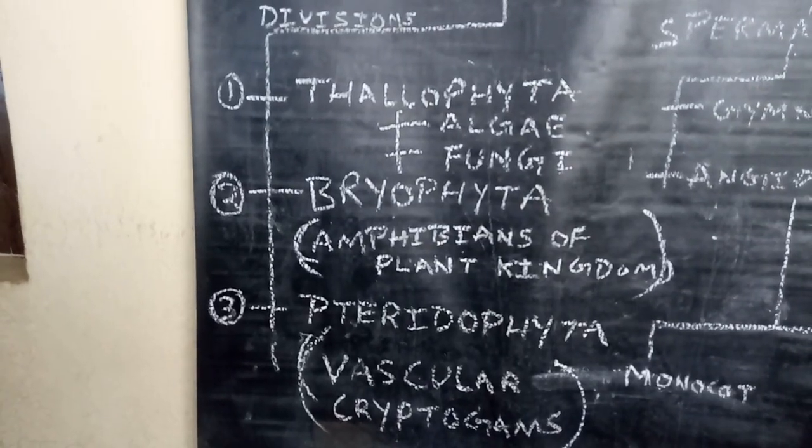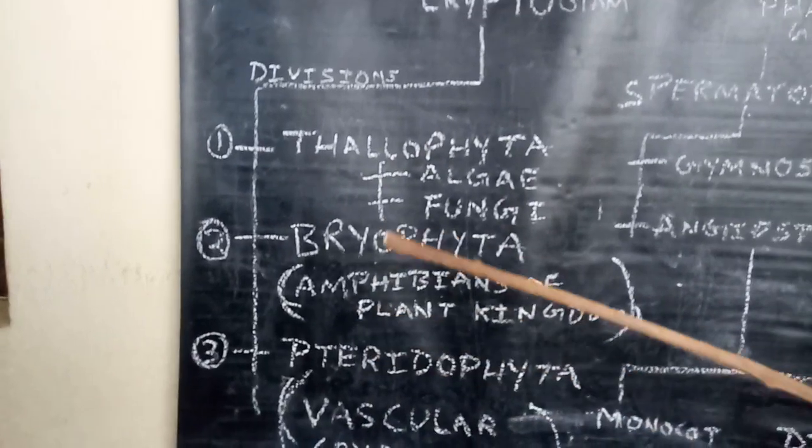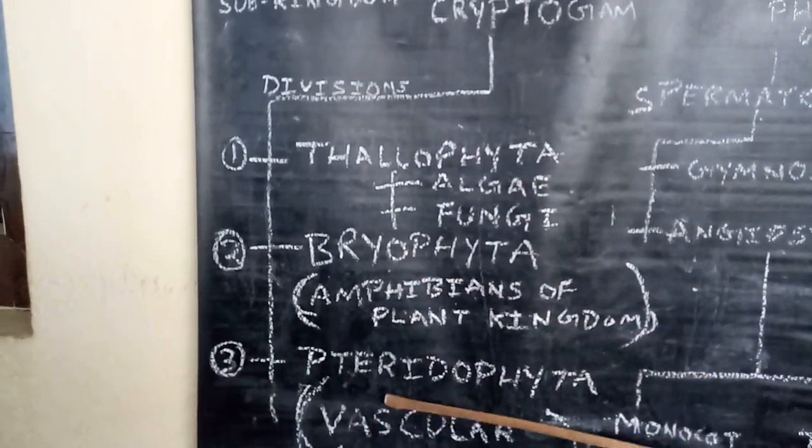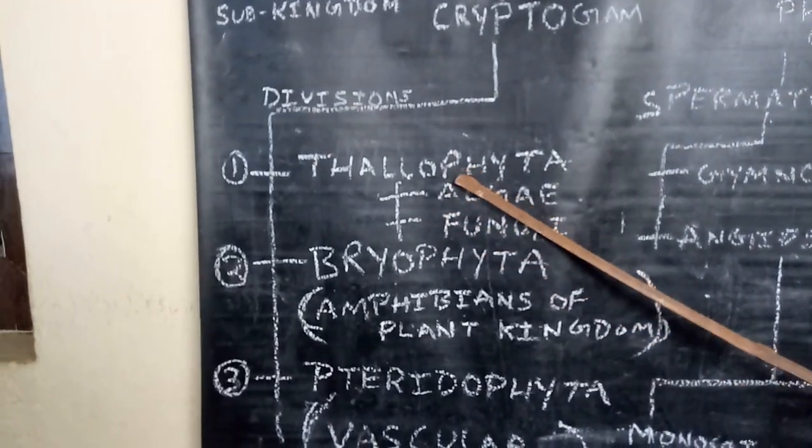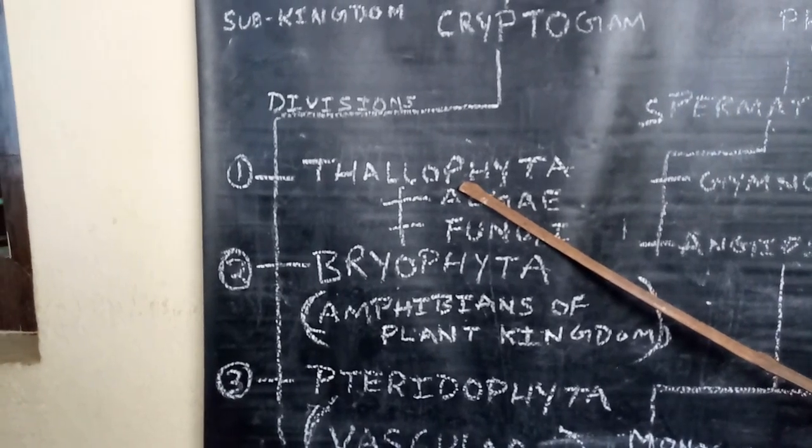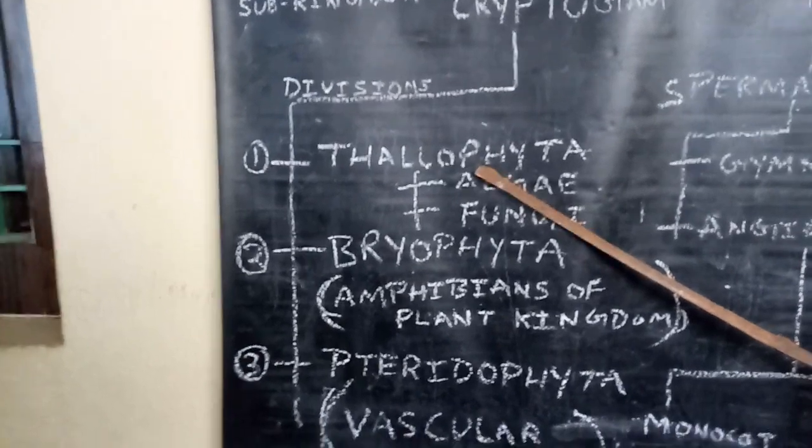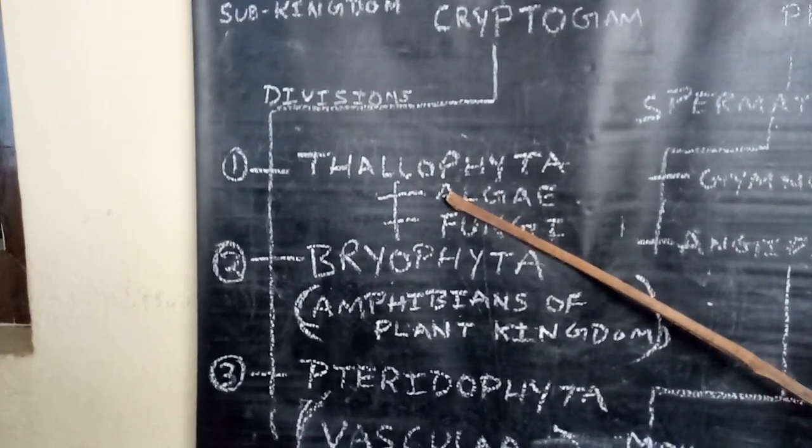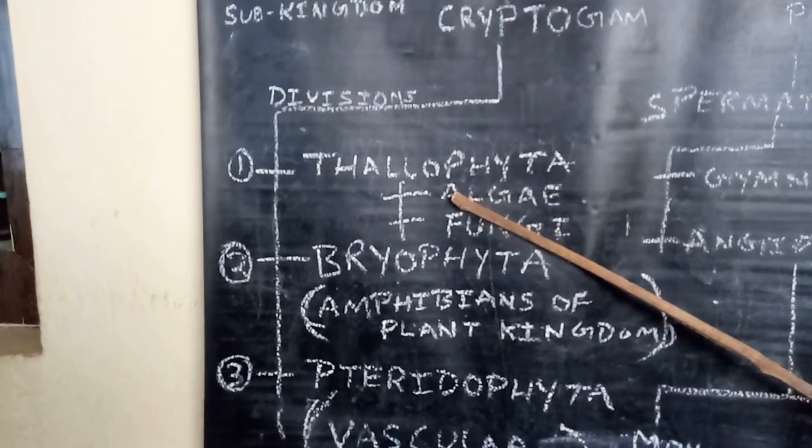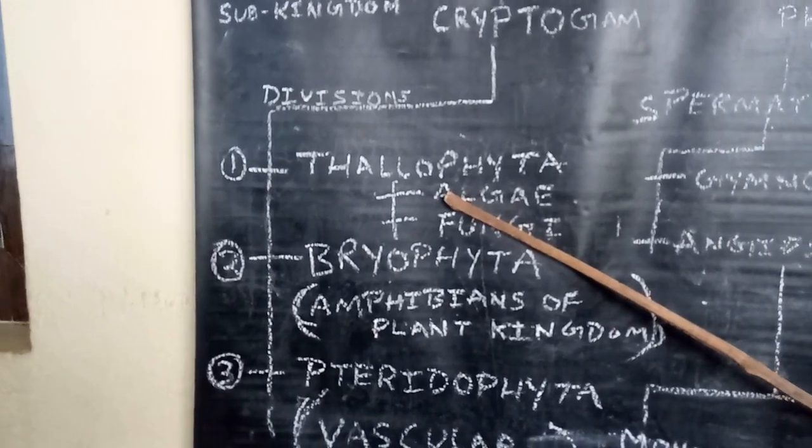Cryptogams are divided into three divisions: Thallophyta, Bryophyta, and Pteridophyta. Thallophytas are those cryptogams that are not differentiated into root, stem, and leaves. Thallophytas are divided into two subdivisions: algae and fungi. Algae are thallophytes with chlorophyll, and fungi are thallophytes without chlorophyll.